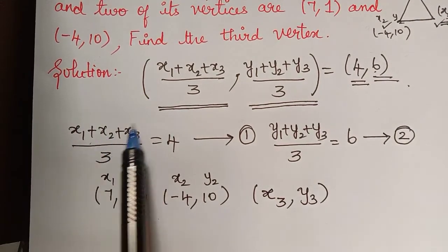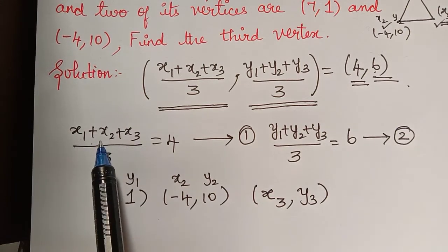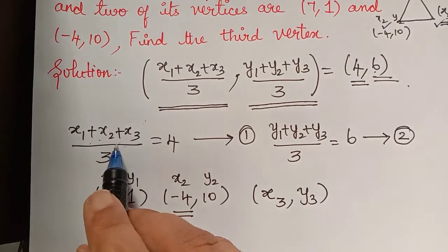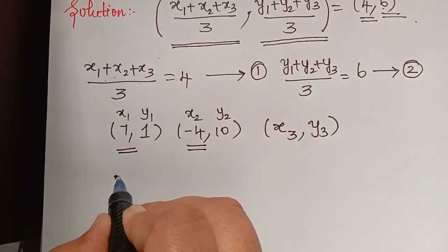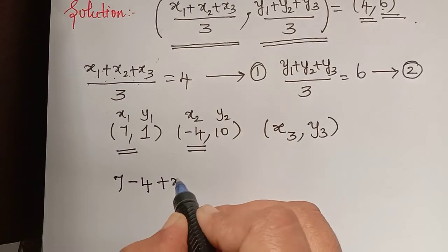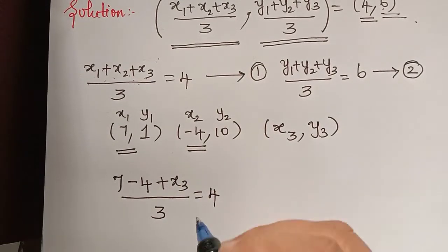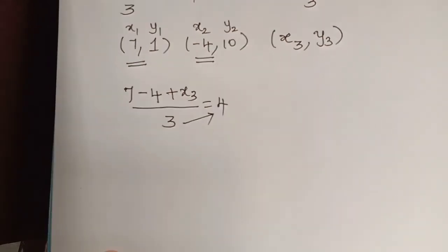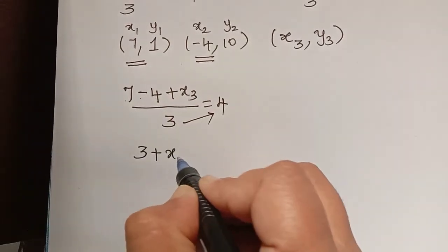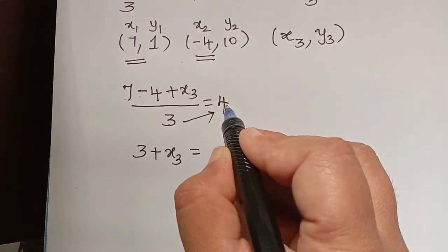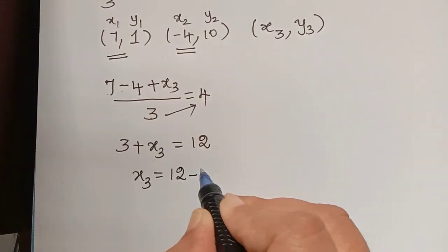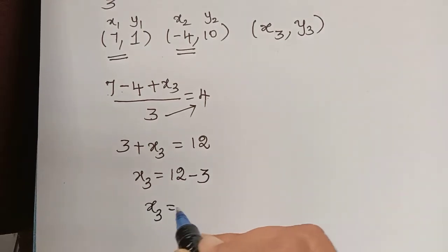We shall substitute in equation 1 the values of x1 and x2 to evaluate x3. Substituting x1 as 7 and x2 as -4: 7 plus (-4) plus x3 divided by 3 equals 4. Cross multiplying, 7 minus 4 is 3, so 3 plus x3 equals 3 multiplied by 4, which is 12. Therefore x3 equals 12 minus 3, so x3 equals 9.